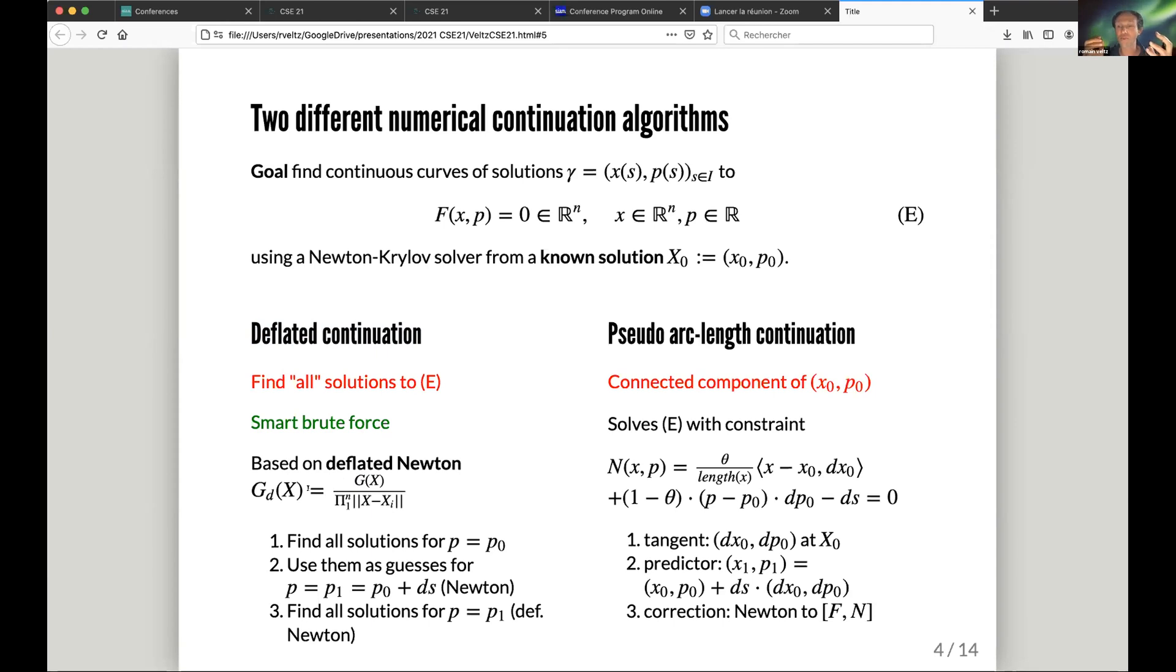It works - I mean, usually it gives you new solutions. It's a deceptively simple algorithm that works very well in practice. Now you can use it: let's say you want to find all solutions for p equal p0 using this iteratively, and then you use these solutions as guesses for p1 equal p0 plus ds. Using deflated Newton, you compute the new solutions, then you apply another deflated Newton to find possibly another solution, and you iterate.